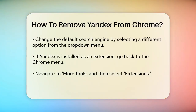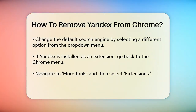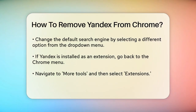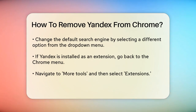Once you're in the Settings menu, you'll see a lot of options, but you need to focus on the search engine section. In the search engine section, you'll see the current default search engine listed. If it's Yandex, you can change it by clicking on the drop-down menu and selecting your preferred search engine, such as Google.